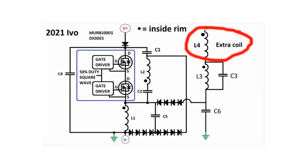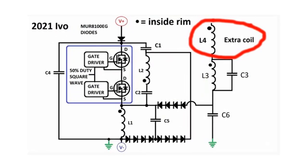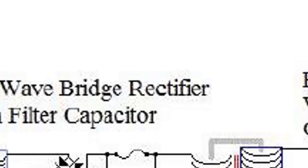In recent years, some researchers have been experimenting with combining the Tesla coil with the bifiler coil to create a device that produces free energy.